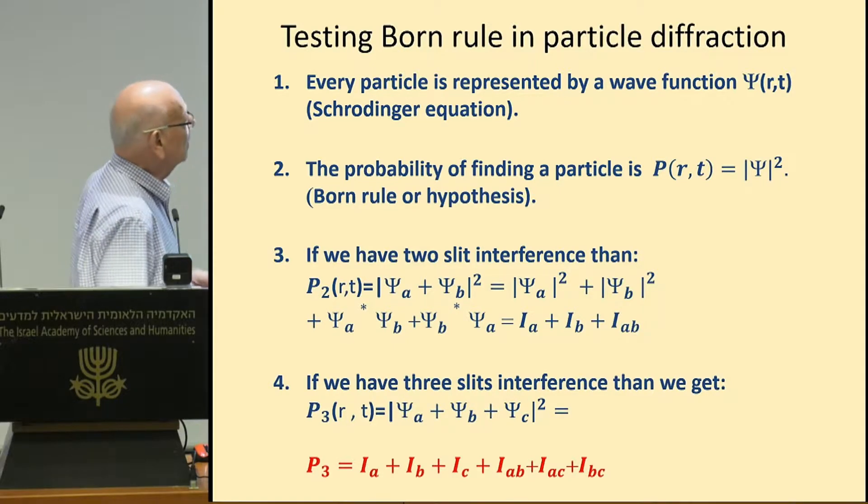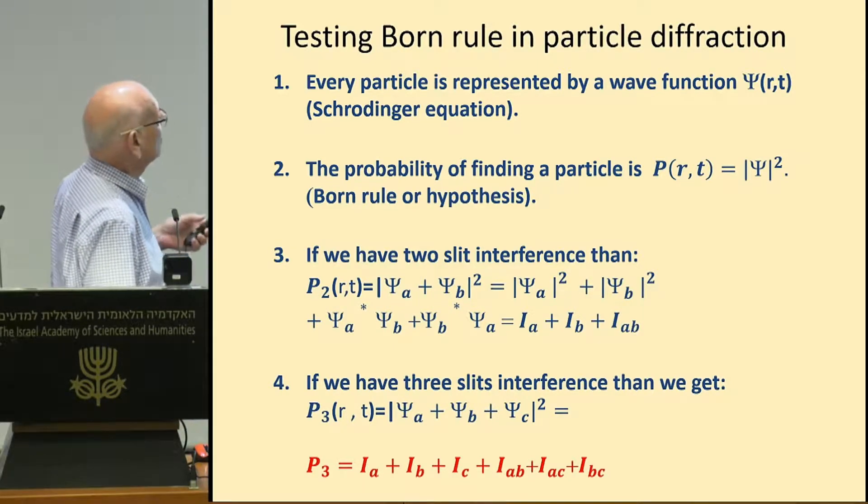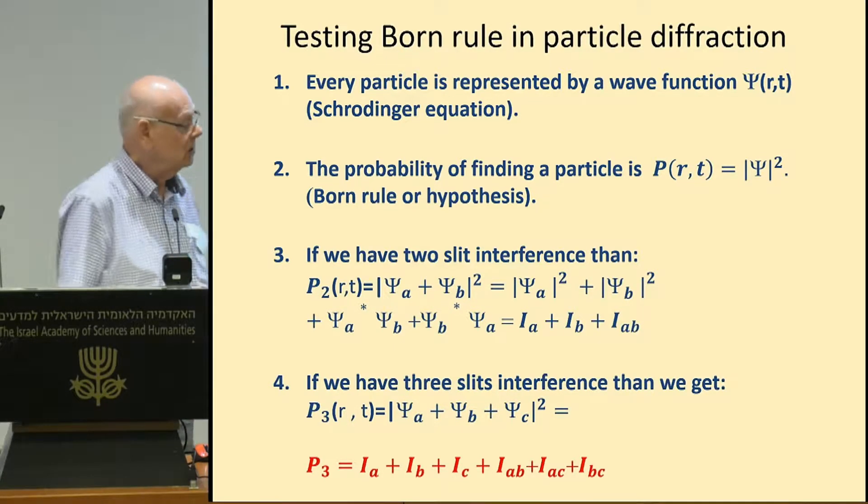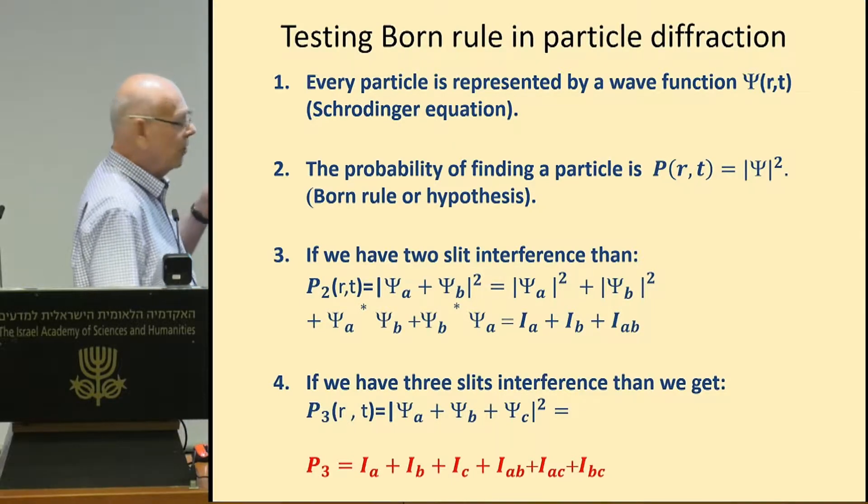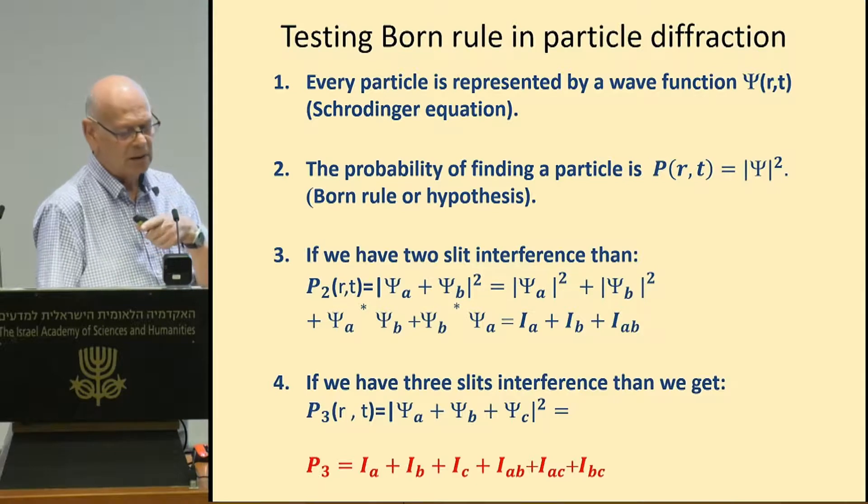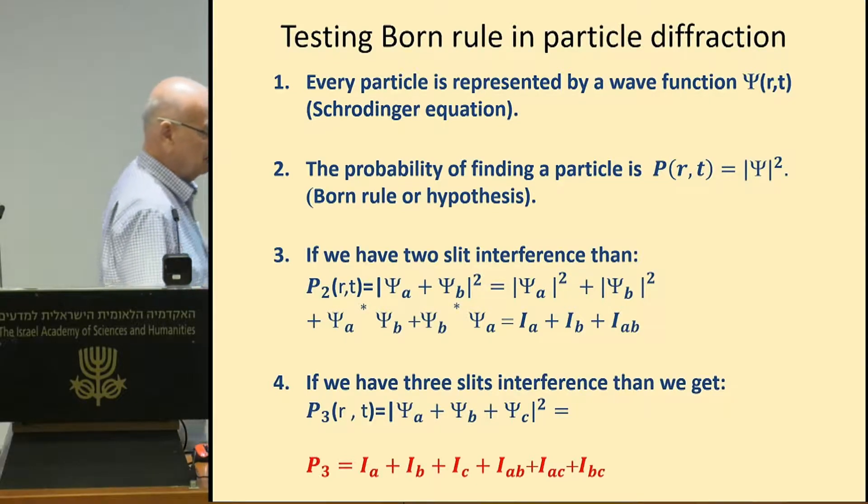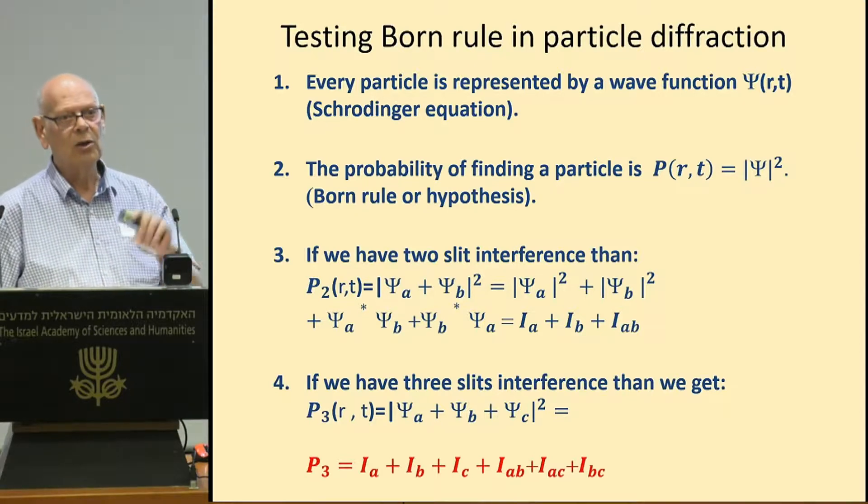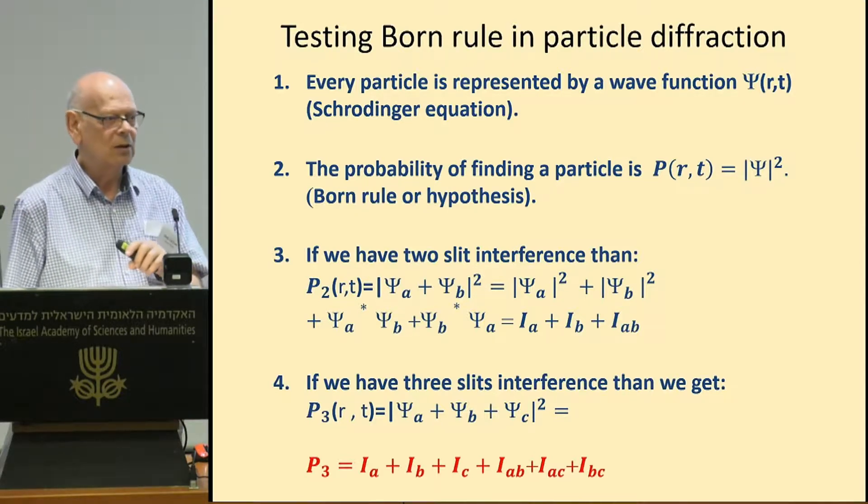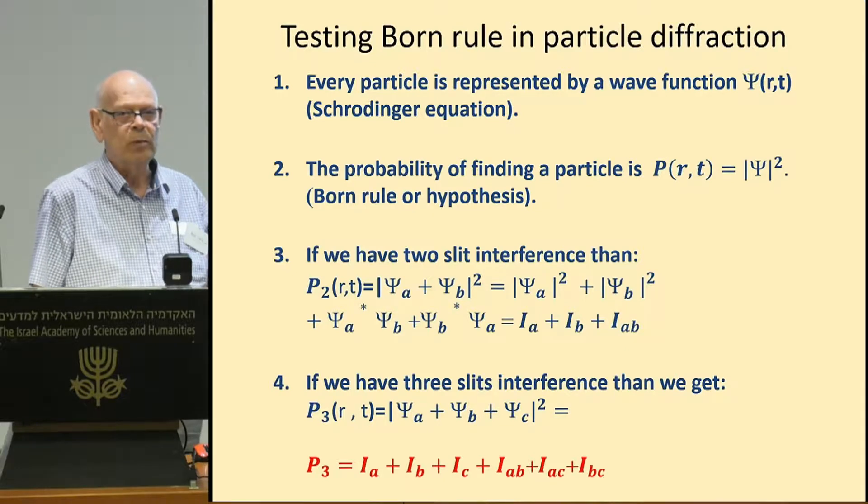So the quantum mechanics tells us that every particle can be represented by a wave function, and that the probability of finding a particle in a certain position and time is the square of this wave function. This is the only connection between quantum theory and reality, what we measure.